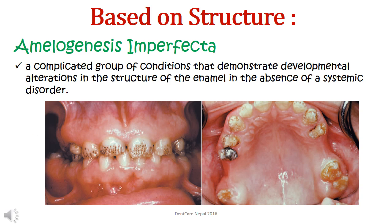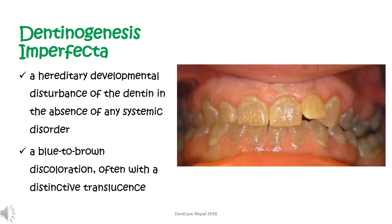Based on structure, we have amelogenesis imperfecta, dentinogenesis imperfecta, and environmental enamel hypoplasia. Amelogenesis imperfecta is the imperfect development of enamel — a complicated group of conditions that demonstrate developmental alterations in the structure of enamel in the absence of a systemic disorder. Pinpoint depressions are clinical manifestations seen in the first figure. Dentinogenesis imperfecta is a hereditary developmental disturbance of dentine in the absence of any systemic disorder, and a blue to brown discoloration often with a distinctive translucent appearance can be seen.